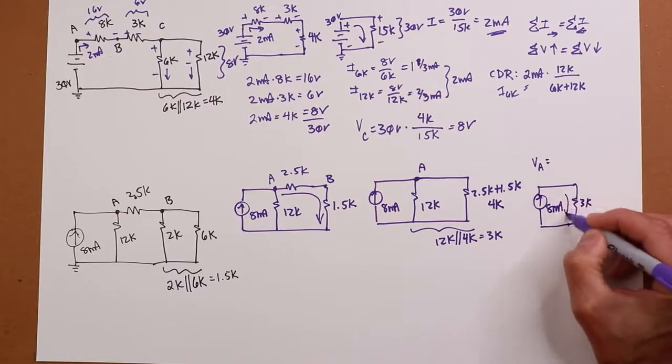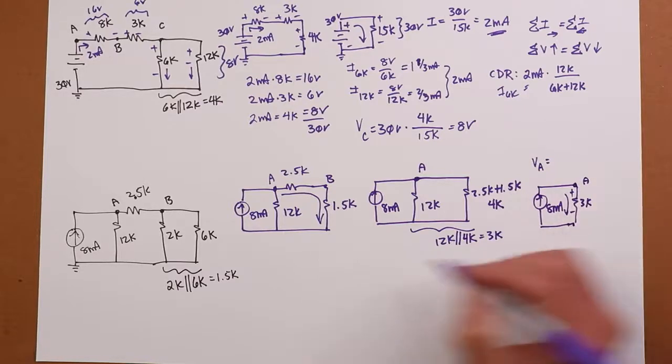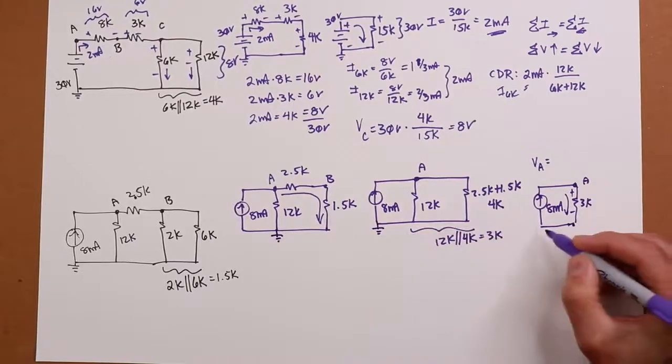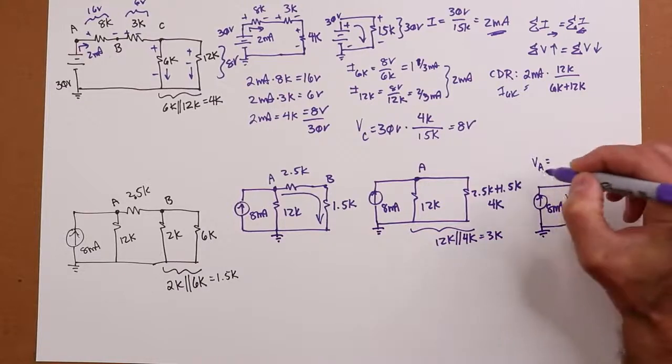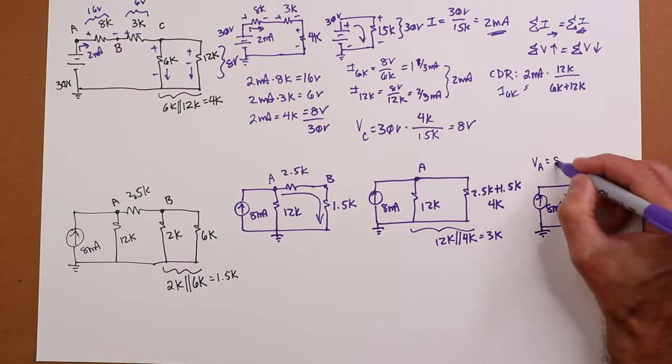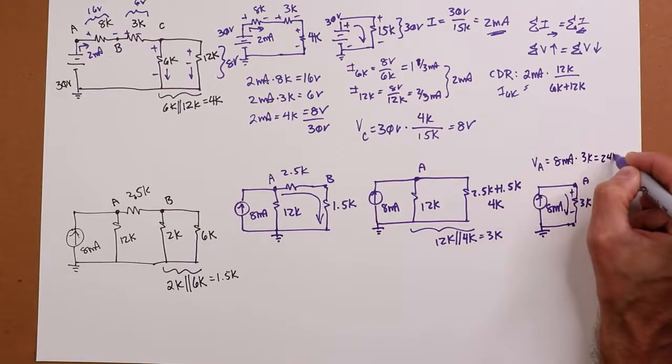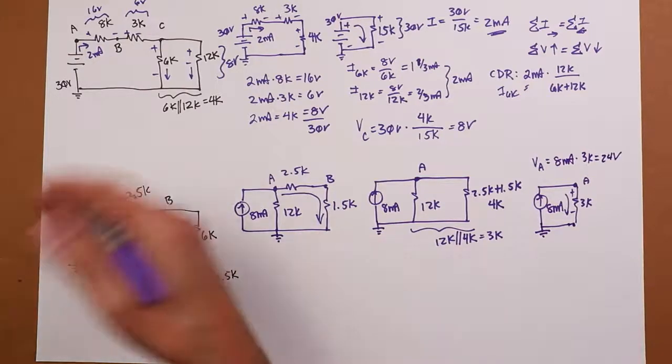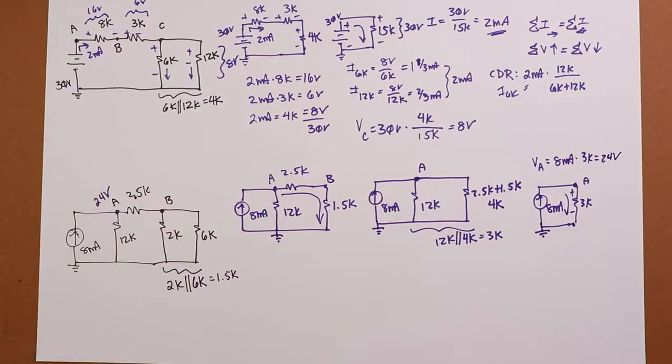All right, that current's going to flow down like this. Plus to minus. This is your point A. So, A to ground. I forgot to put my grounds in here. So, VA is going to be 8 mL times 3K, which is 24 volts. Now, let's go back. I know VA is 24 volts. I can go back to my first circuit and say, hey, this is 24 volts. How do I want to break it apart from here?